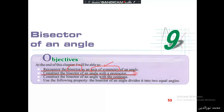So we have two methods to construct a bisector: using the protractor and using the compass. We will also use the following property: the bisector of an angle divides it into two equal angles.